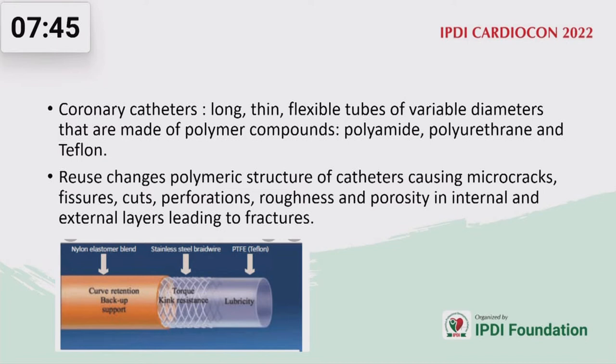What exactly happens is these coronary catheters are flexible tubes with variable diameters and different polymer compounds — like polyamide, polyurethane, and Teflon. Repeated use of these catheters leads to changes in the structure, causing micro-cracks, fissures, cuts, perforation, roughness, or porosity in internal and external layers, leading to fractures.